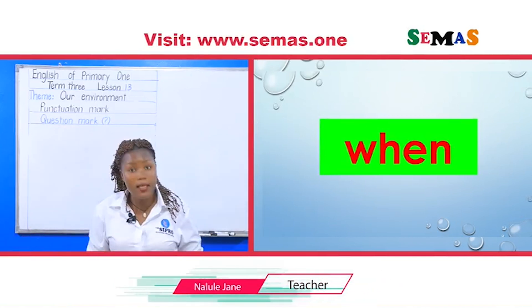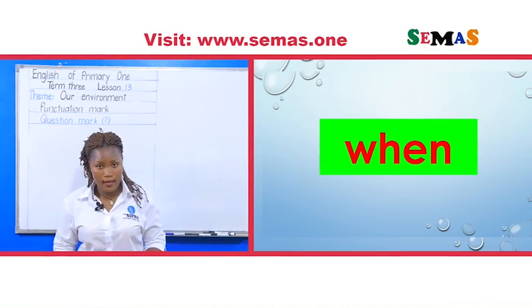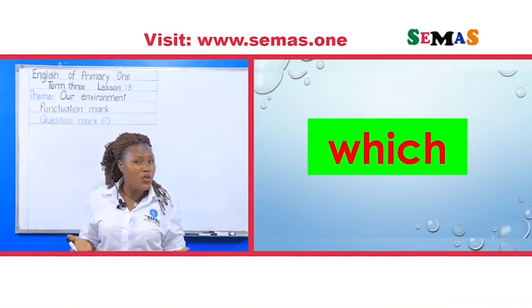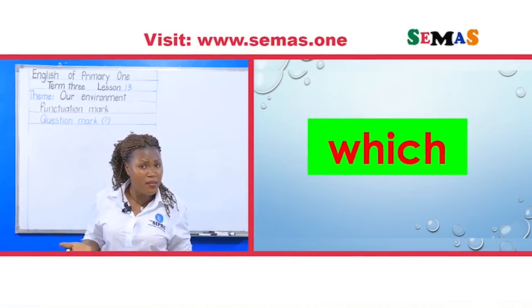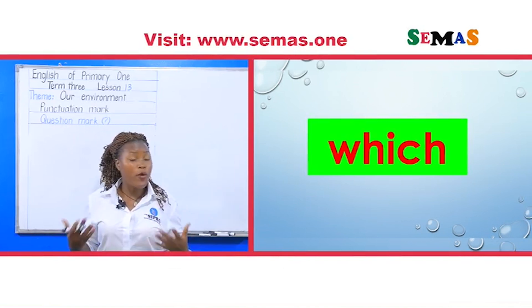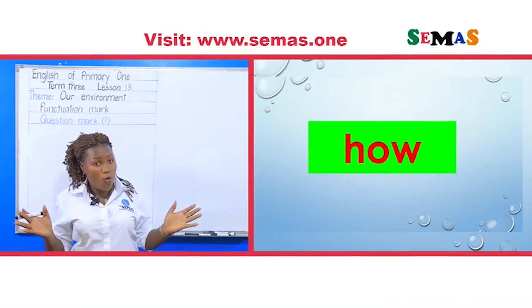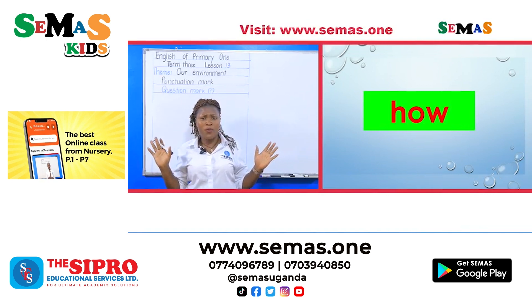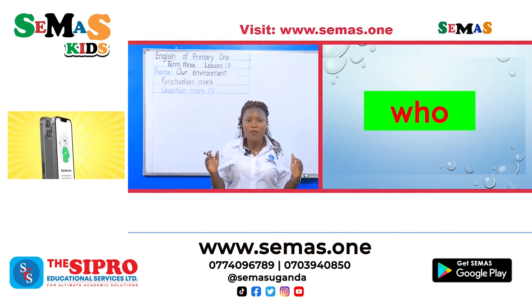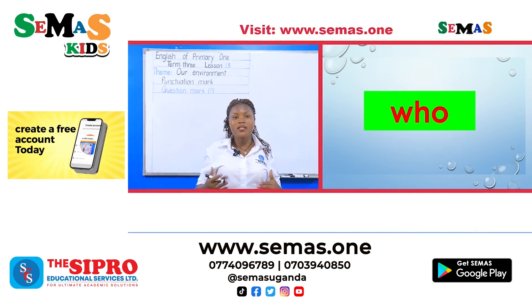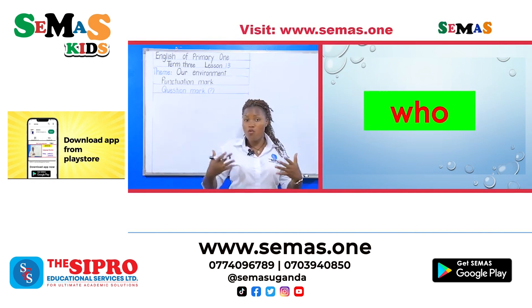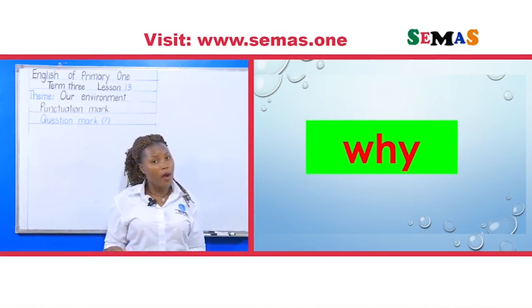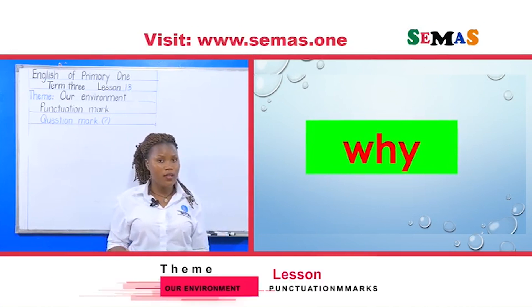'When' is asked when someone wants to know the time. 'Which' means you have to identify a specific item. 'How' wants to know the process in which something happened. 'Who' is asked when someone wants to know a person. And lastly, 'why' — for 'why' you have to give a reason.